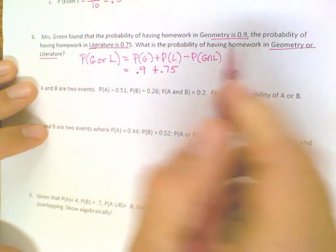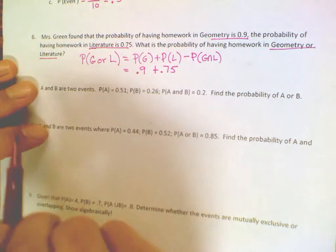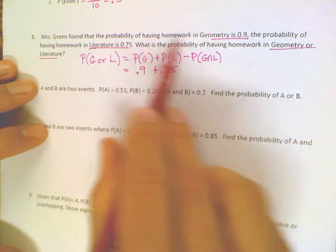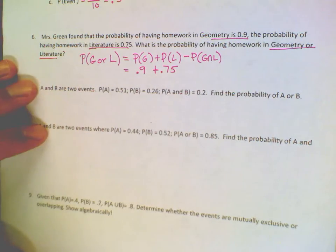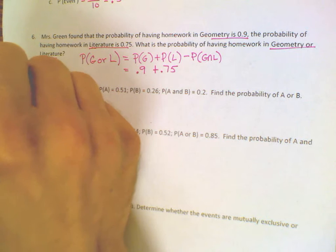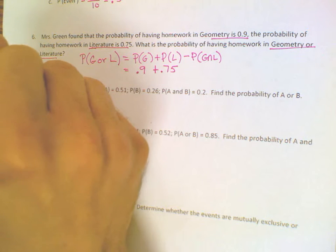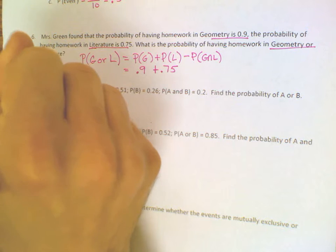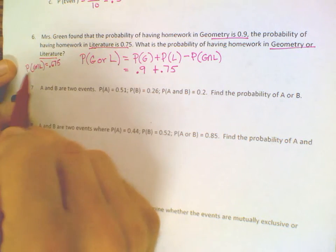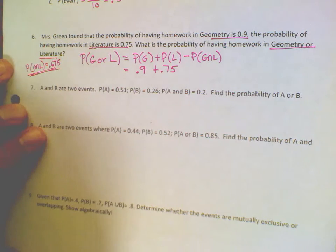And then it says probably—oh, there was a mistake on this question and I forgot to tell you. So the probability of geometry and literature was point 675. I'm sorry about that. So that's actually part of the problem.